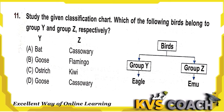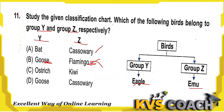Next question: study the given classification chart. Which birds belong to Group Y and Group Z respectively? Group Y is the eagle group and Group Z is the emu group. Bat and cassowary — bat is not in the eagle group. Goose and flamingo — flamingo can fly but emu cannot, so they're not from the same group as emu. Ostrich and kiwi — both cannot fly, so ostrich doesn't match the eagle group. Goose and cassowary — goose can fly like the eagle group, and cassowary cannot fly like the emu group. Option D is the right answer.